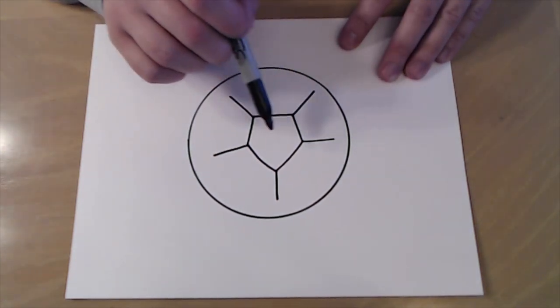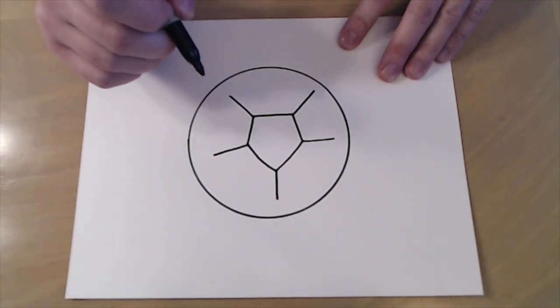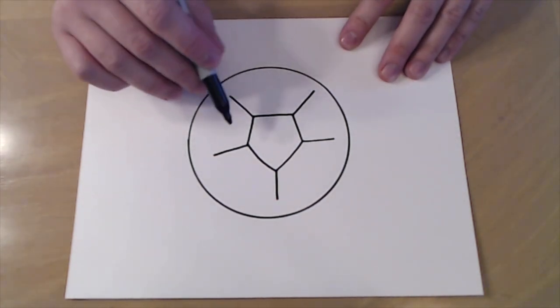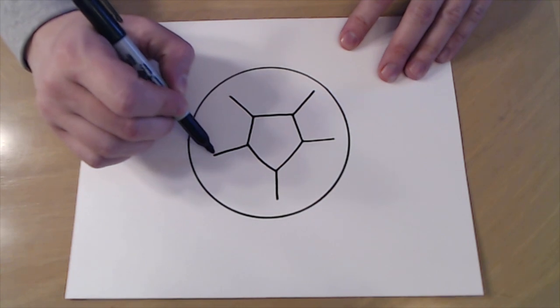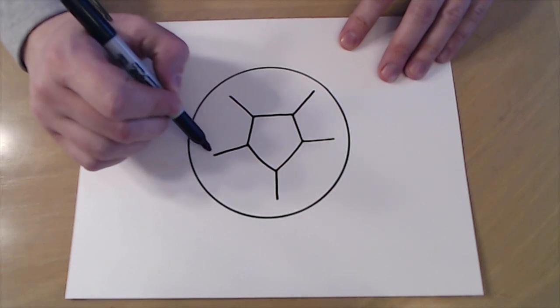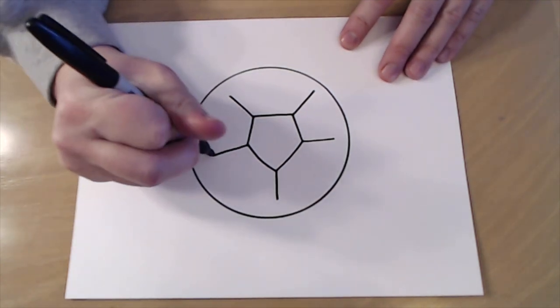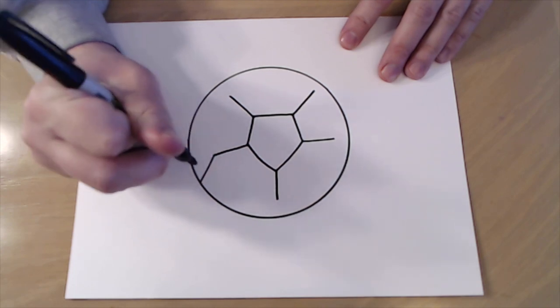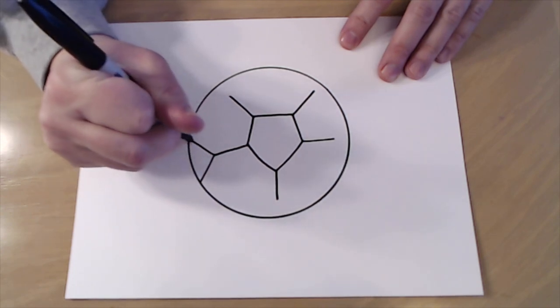Now it's okay if you have more space on one side than the other. That gives it a little bit more of a realistic feel. Now after you do that then you want to draw a triangle at the end of each one of these lines. So I'm going to start here and just go all the way to the edge of my circle.